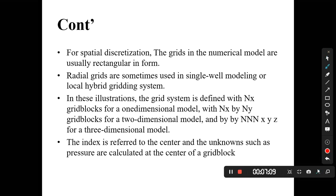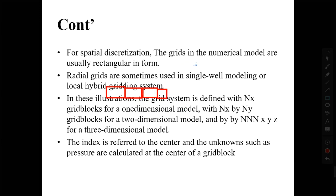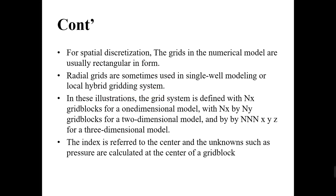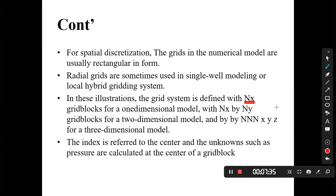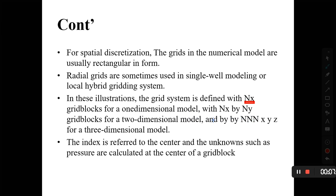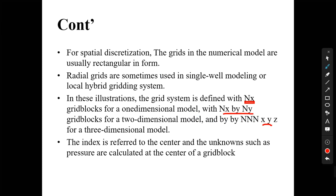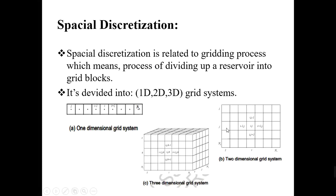The grid sizes we usually use are rectangular in form — sometimes regular, sometimes irregular, depending on saturation and properties. For one-dimensional we define the grid block in only the x-direction. For two-dimensional we have Nx by Ny. For three-dimensional we have x, y, and z — so Nx by Ny by Nz. Here you can see only x-direction, then x and y, and then x, y, and z in three dimensions.